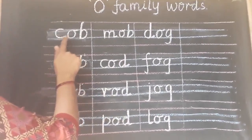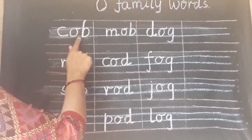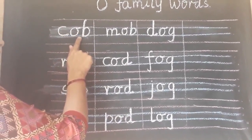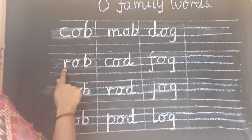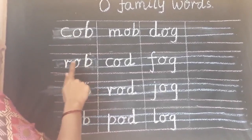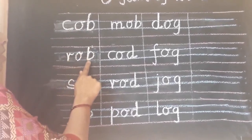Now we will see OB words. K-OB, COB. Please repeat after me. K-OB, COB. R-OB, ROB. R-OB, ROB.